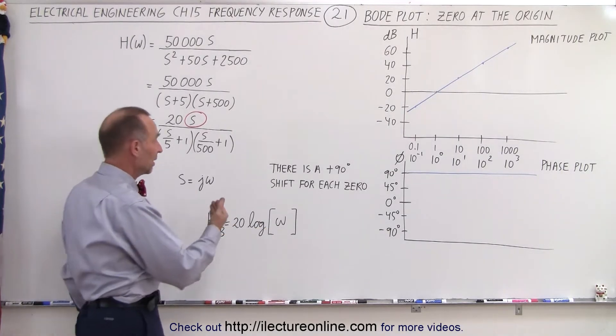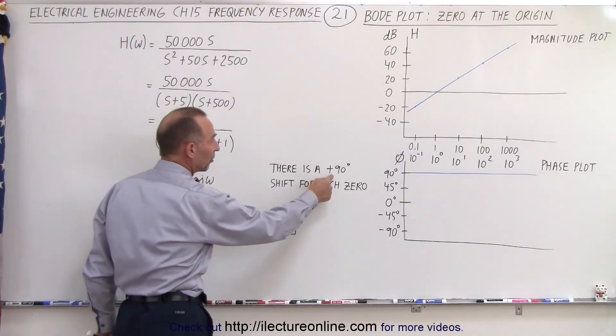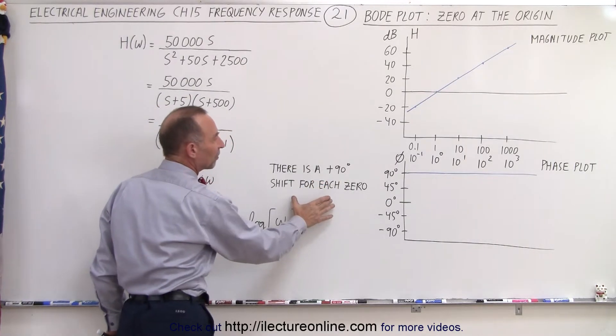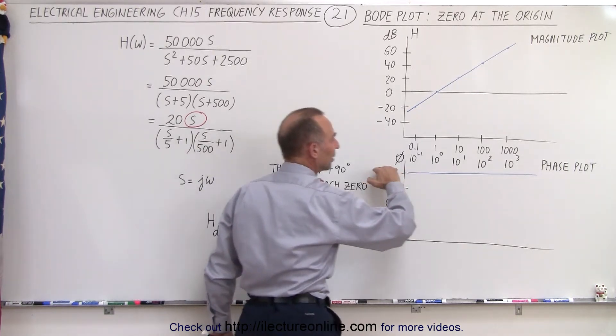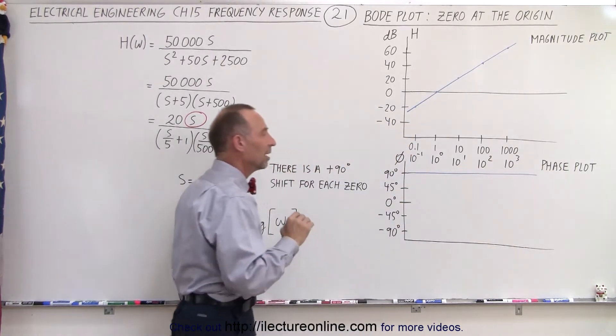It turns out for every zero there's a plus 90 degree phase shift and so when we draw the phase plot you can see for a zero we have a plus 90 degree all the way through for every omega.